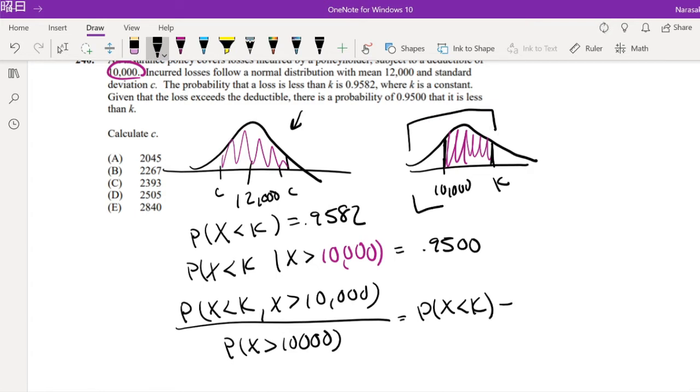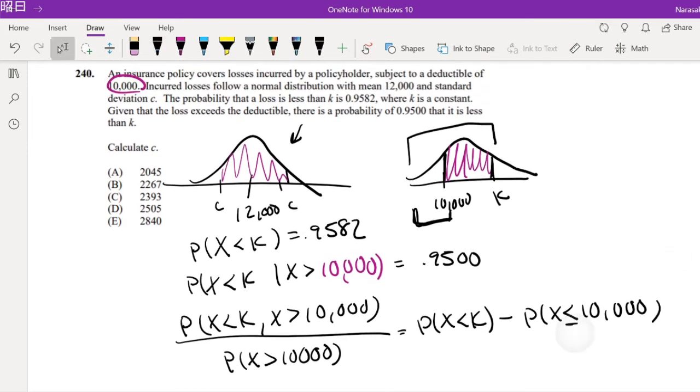Minus this part right here, because this is the part we don't need. Minus X is less than $10,000. I mean, for technical difficulty, we can put that including $10,000, but it really doesn't make a difference because it's continuous.